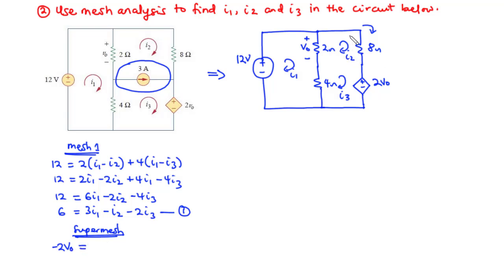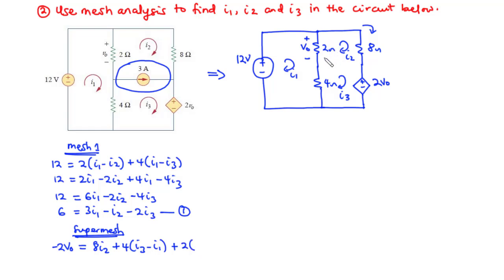We have current I2 flowing through the 8-ohm resistor, giving 8I2. We have current I3 flowing one way and I1 also flowing that way, giving plus 4(I3 minus I1). Then we have current I2 and I1 in the 2-ohm resistor, giving plus 2(I2 minus I1).